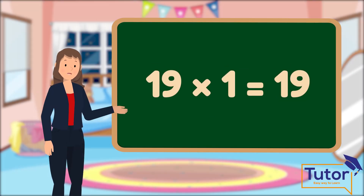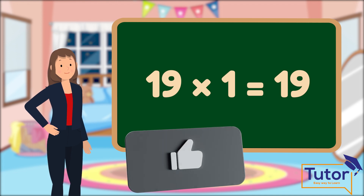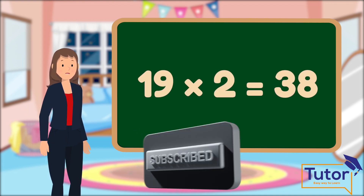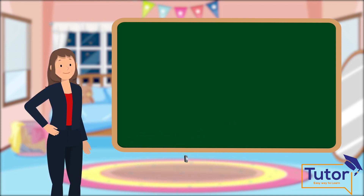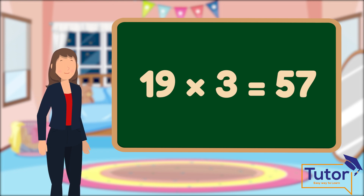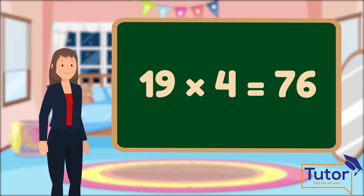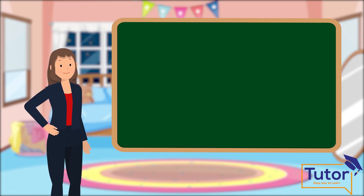19 into 1 equals 19. 19 into 2 equals 38. 19 into 3 equals 57. 19 into 4 equals 76.